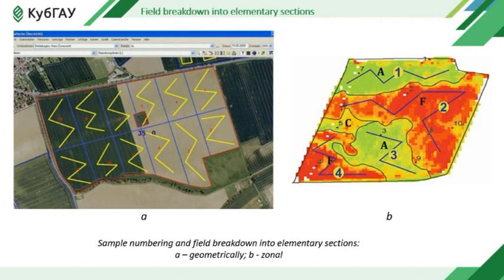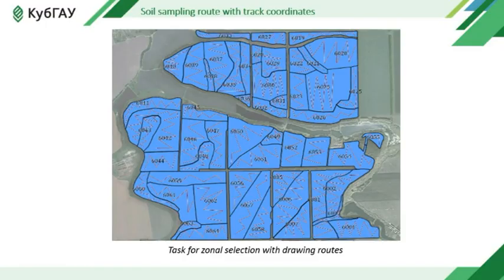The advantages of zonal soil sampling along tracks are that soil does not mix with neighboring zones. In this case, each polygon is an elementary section. Soil sampling roads have track coordinates: inside each elementary section in the program, the track of the sampler moves along the diagonal or along a curved path. It is a curved selection road along which a specialist operates the automatic sampler.